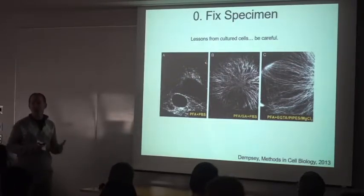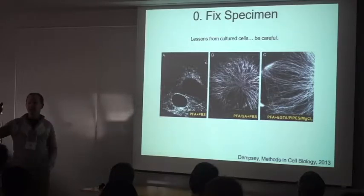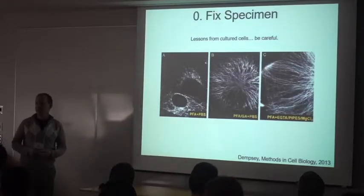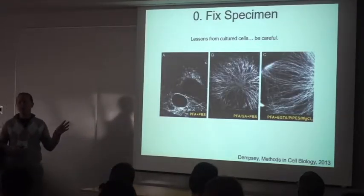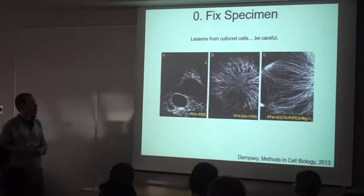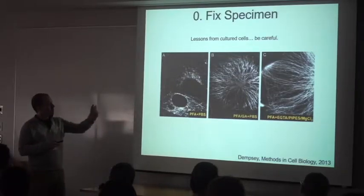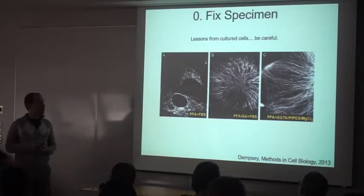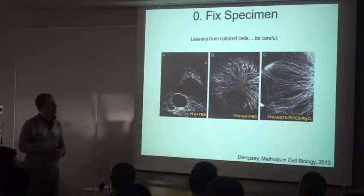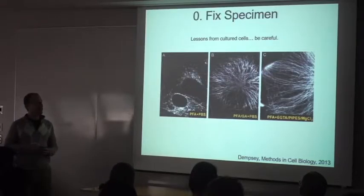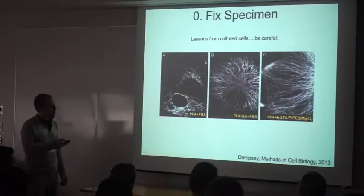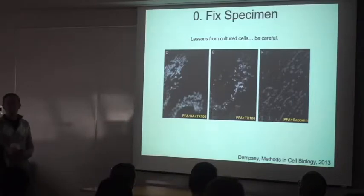I should mention glutaraldehyde masks epitopes. How many of you have struggled with that? You've got a great antibody that works for PFA and then you switch to GA, all of a sudden all bets are off. I think the people who generate antibodies don't think about that as much as they could. There's actually a trick - there's a buffer that can keep microtubules happy and allow the milder fixation.